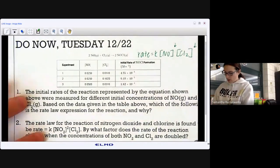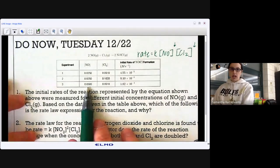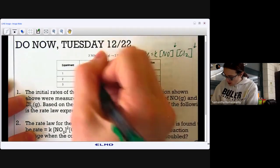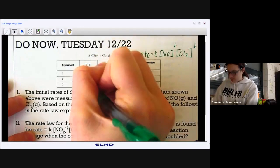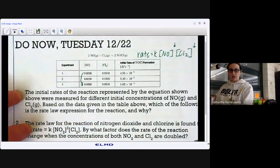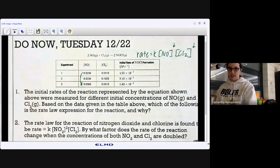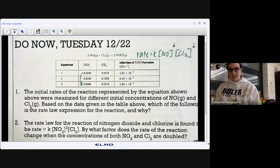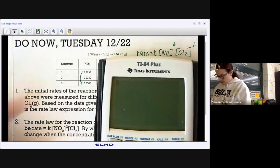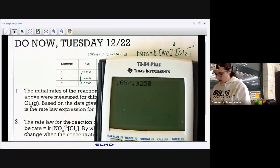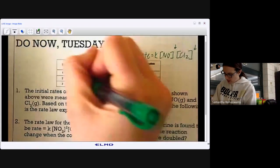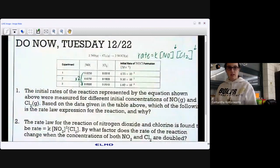So for NO, I want to see where does NO change, but Cl2 stays constant. So I noticed from one to three, from one to three, NO changes, but Cl2 stays constant. So I'm going to see how it changes. So just in case you're like, it's too early for math, well, let's just use our calculator to help us. 0.05 divided by 0.025 is two. So from one to three, the concentration doubles.